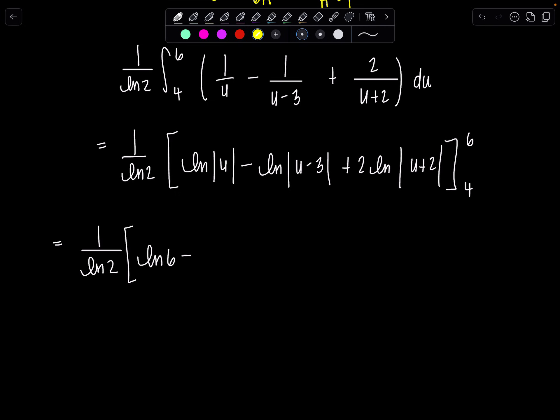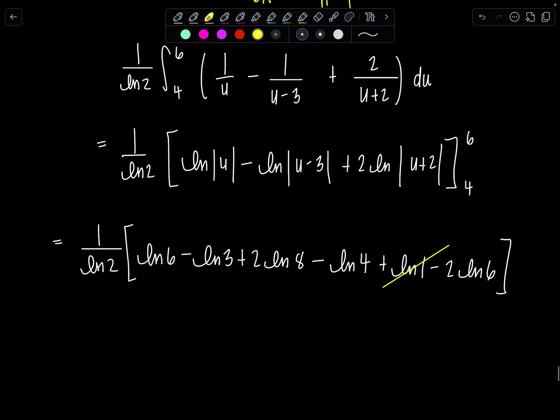So this is 1/ln(2). Upper limit is going to be ln(6) - ln(3) + 2ln(8) minus lower limit. So minus ln(4) + ln(1) - 2ln(6). ln(1) is 0, so get on out of here. These I can combine, they're the same log. And I feel like we're going to clean up quite a bit with our log properties.